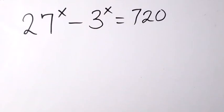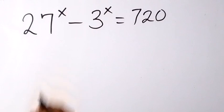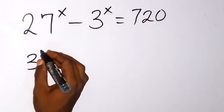Good day viewers, thank you for joining us. I want to solve this problem: 27 raised to power x minus 3 raised to power x equals 720. Now let's change 27 as 3 raised to power 3.